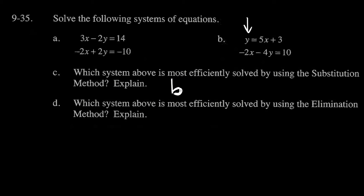And then which system above is most efficiently solved by using the elimination method? I would definitely have to pick A because it's the only one left, but also because I can see that when I take these equal things and I combine these equal things, my Y variables are going to eliminate on the left-hand side because they're opposite. I've got a negative 2Y and a positive 2Y. So I'm going to use elimination for A and I'm going to use substitution for B.